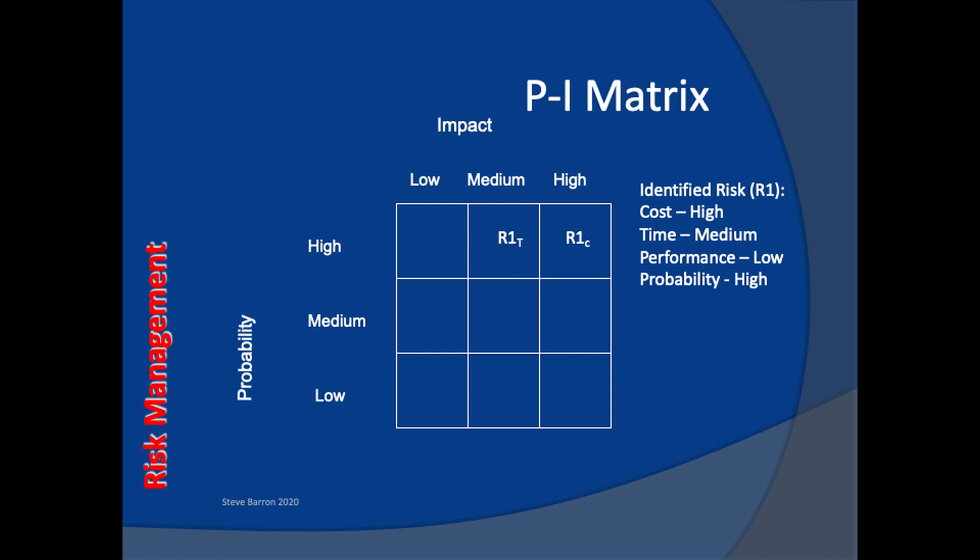The risk for time is rated as medium, so it sits in the cell for medium impact and still on the top row for high probability. For a project lasting a year, a high impact risk would introduce delays of about a month or more. A medium risk would delay the project by weeks, and a low time impact delay would be days.